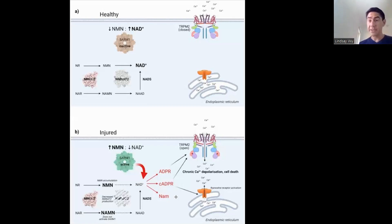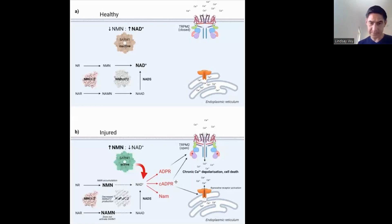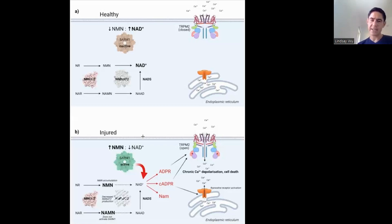SARM1 activation also forms products that trigger depolarization — it allows calcium into the cell and ultimately triggers cell death. You want to avoid the accumulation of NMN in neurons because that could trigger this unique cell death pathway. However, this only occurs with severe physical injury — you could imagine it being related to a traumatic brain injury, for example.